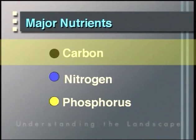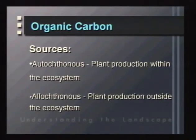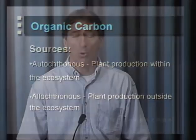The sources of carbon include the production that occurs within an ecosystem. We often call that plant production within an ecosystem autochthonous organic carbon. It also requires material from outside the ecosystem that comes into it, such as leaves and needles falling into a stream. We refer to these as allochthonous organic material or allochthonous carbon, and these sources of energy are very important for both aquatic and terrestrial ecosystems.